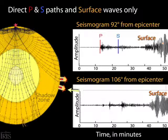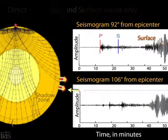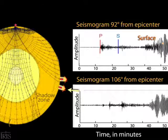However, if we look at an actual seismogram from 106 degrees, we see more complexity than just the surface waves we expected.